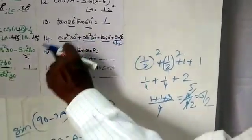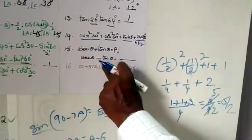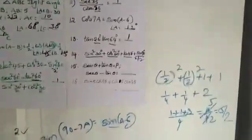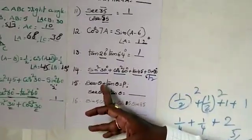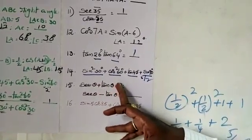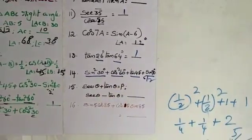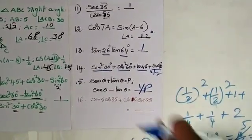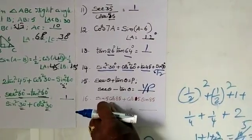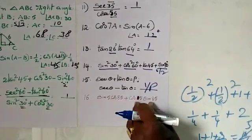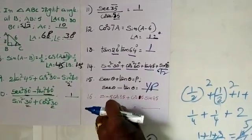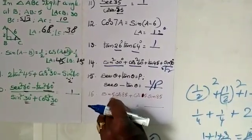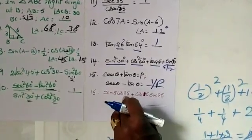This is very important. Here we are rationalizing - for the product it will be cos 85 multiplied by cos 5, and cos A cos B form, and the product is 1.